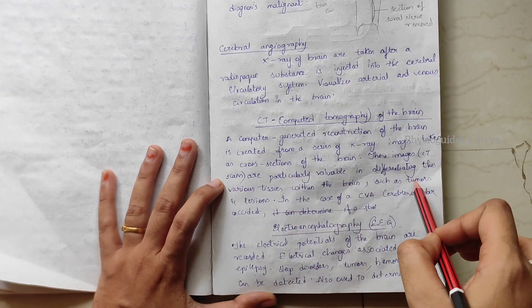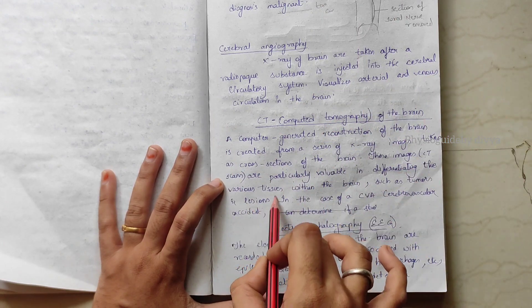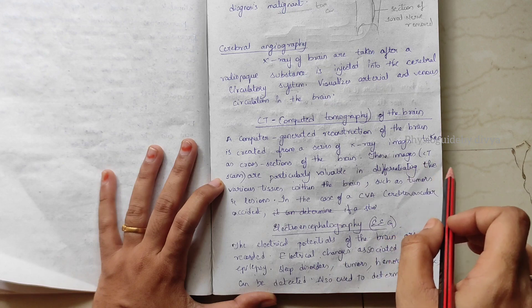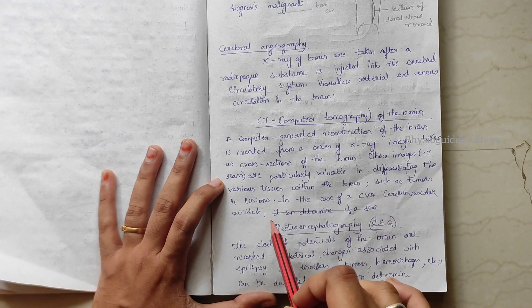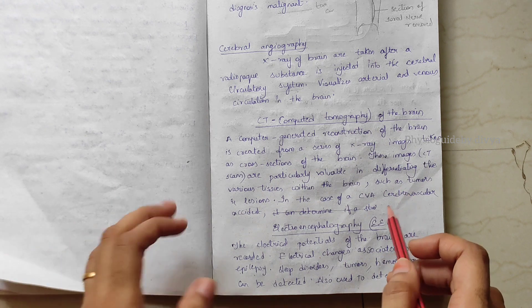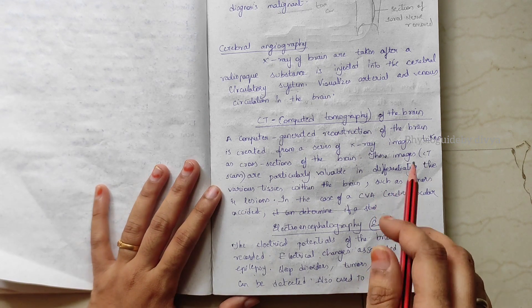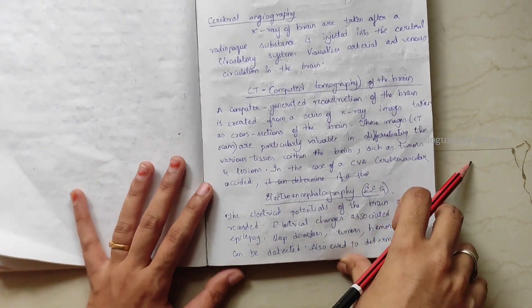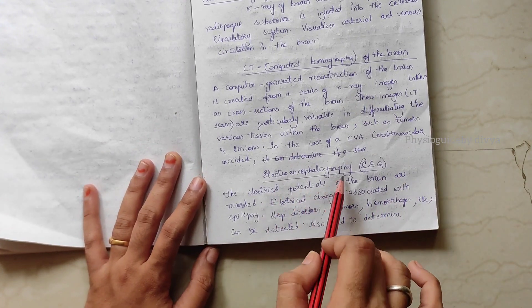Tumors and lesions can be identified in cases of cerebrovascular accidents, in road traffic accident cases, CVA patients. We can identify problems using CT scan of the brain. Now electroencephalography, EEG.